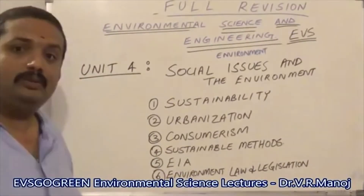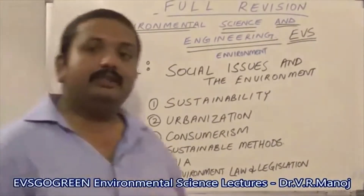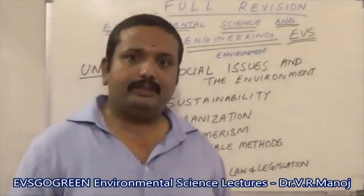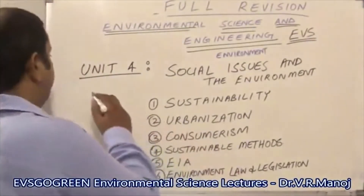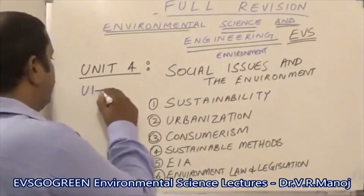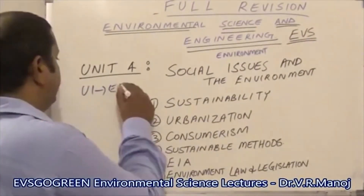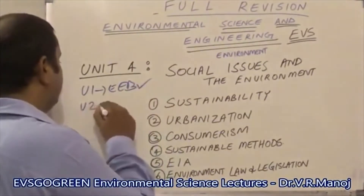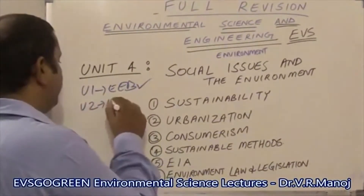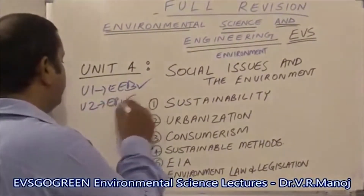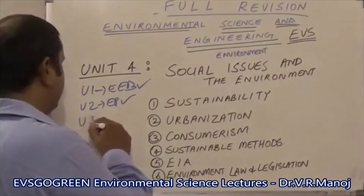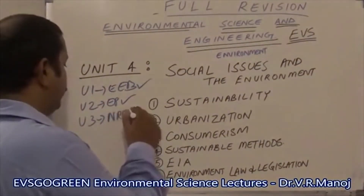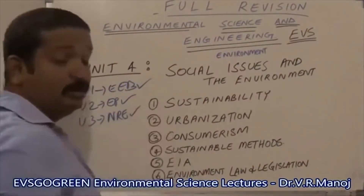Now we are going to revise Unit 4, Social Issues and Environment. What have we seen so far? We have seen Unit 1, Environment, Ecosystem, Biodiversity — that is over. Unit 2, Environment, Food Pollution — that is over. Unit 3, Natural Resources and Environment — that is also over.